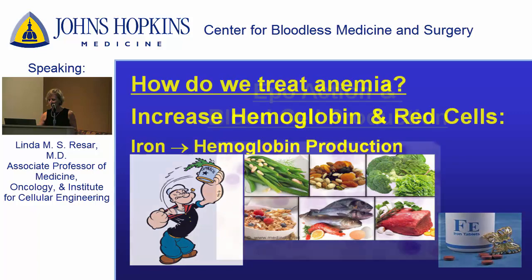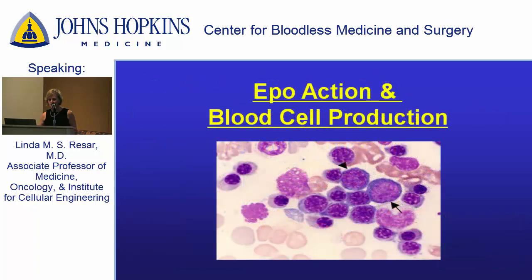These are young red cells being made in the bone marrow — in the center of our long bones in our arms and legs. When EPO and iron are available, they go to the young red cells and make progeny or baby red cells. This is what they look like when they're just about ready to go out into the circulation and carry oxygen and hemoglobin.